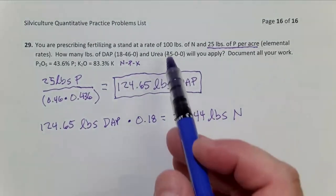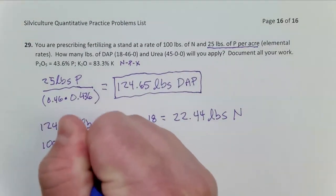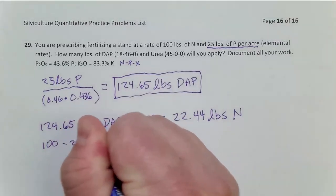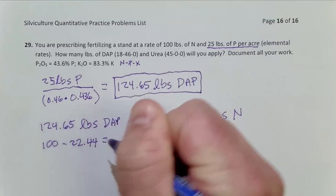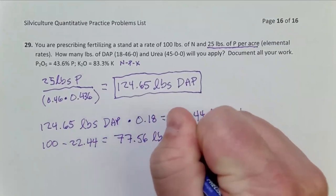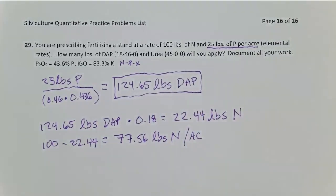Okay, so of my 100, I've already applied 22.44. So let's see how much I need to apply for me. So I'm 100. I've already applied 22.44, so I'm going to subtract that. And this is going to mean I still need to apply 77.56 pounds N per acre. All these numbers are going to be on a per acre basis.